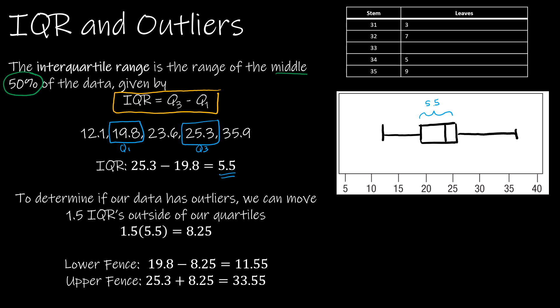That's helpful because it tells us how spread out our data is, but another reason the IQR is helpful is it can determine if our data has any outliers. I can go 1.5 IQRs to the left of the first quartile and 1.5 IQRs to the right of the third quartile, and that's going to give me what's called a fence. A fence is an imaginary line that says this is the end of the values we should expect. Anything outside of the fences is considered an outlier — data values that don't fit with the rest of our data.